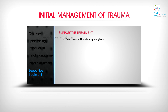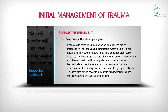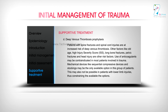For deep venous thrombosis prophylaxis: patients with spine fractures and spinal cord injuries are at increased risk. Other risk factors include old age, high injury severity score (ISS), long bone fractures, pelvic fractures, and head injury. Use of anticoagulants may be contraindicated in most trauma patients. Mechanical devices like sequential compressive devices and stockings may be the only available option, though these may also not be possible in patients with lower limb injuries, thus constraining the available options.